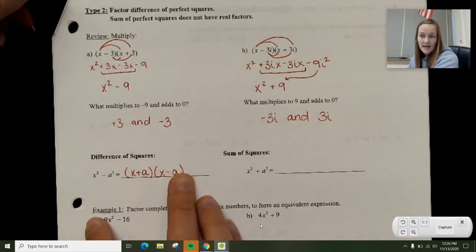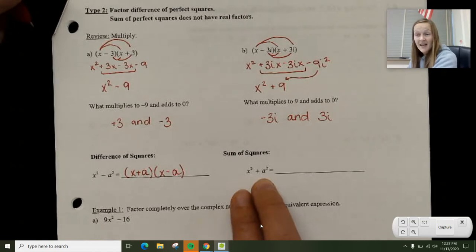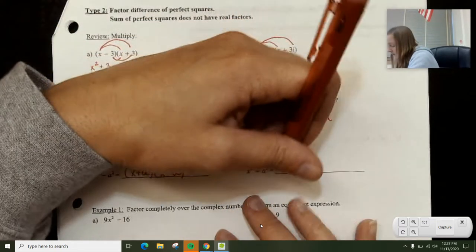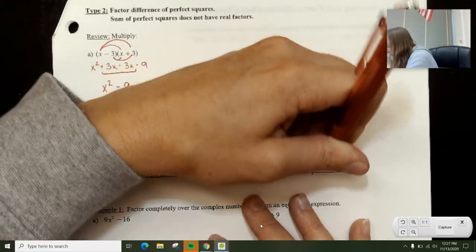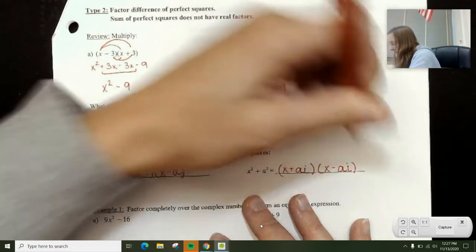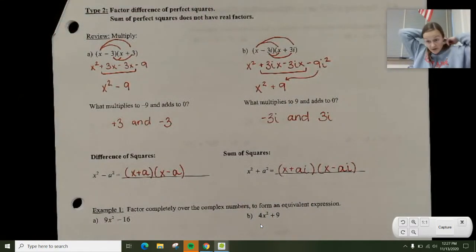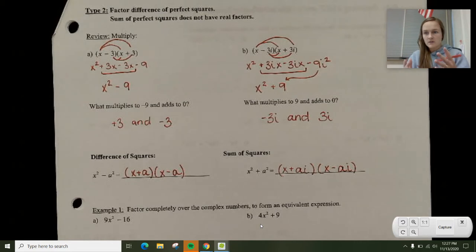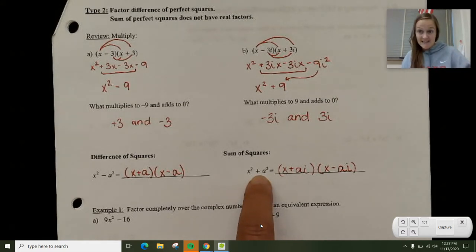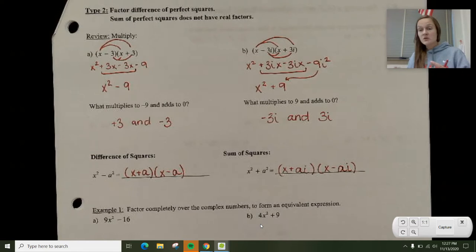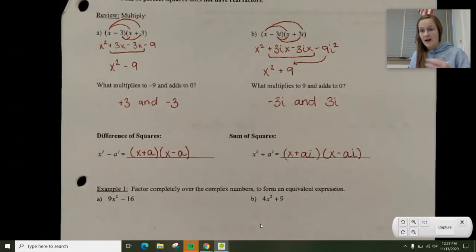If you have a sum of squares, x² + a², you're left with (x + ai) and (x - ai). So in the sum of squares you have imaginary roots. One of my students a couple years ago came up with the expression 'add the i's.' So that's how they remembered it. They had the plus sign and they said 'add the i's.' When you see the plus sign, you're thinking okay, I need i's in my factored expression.